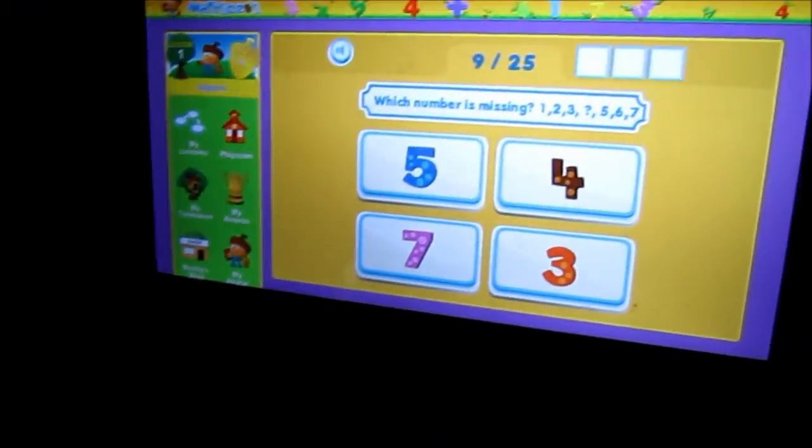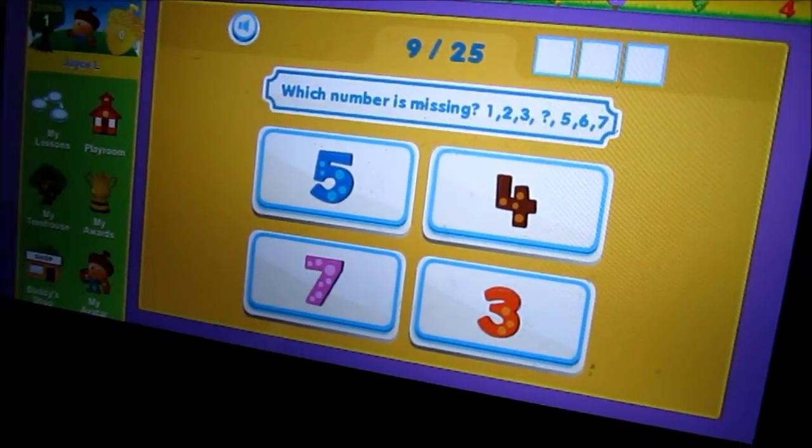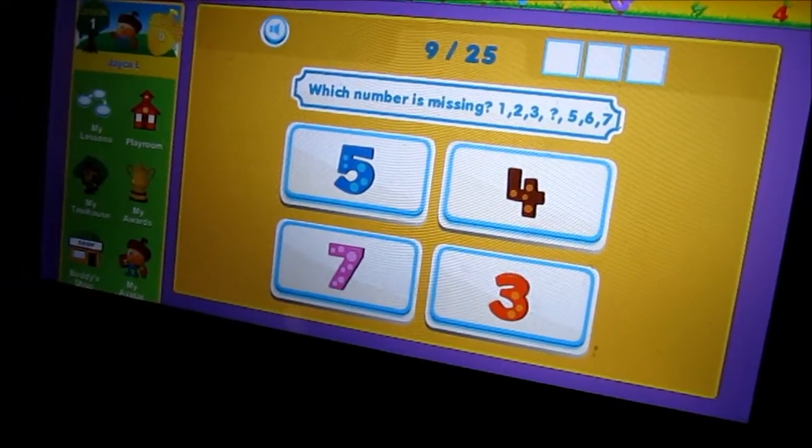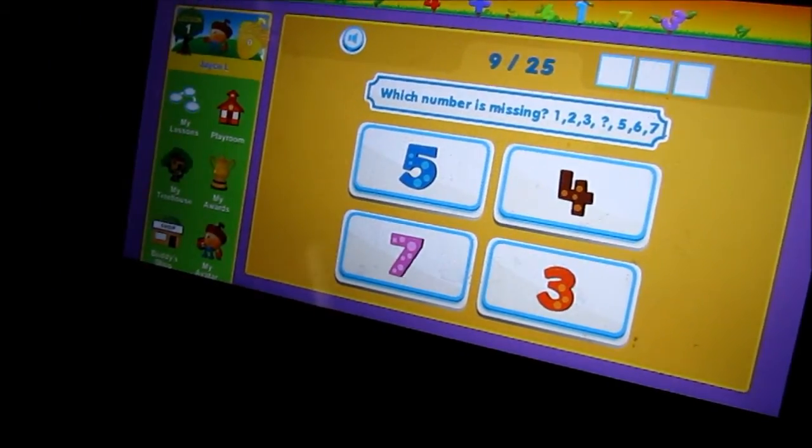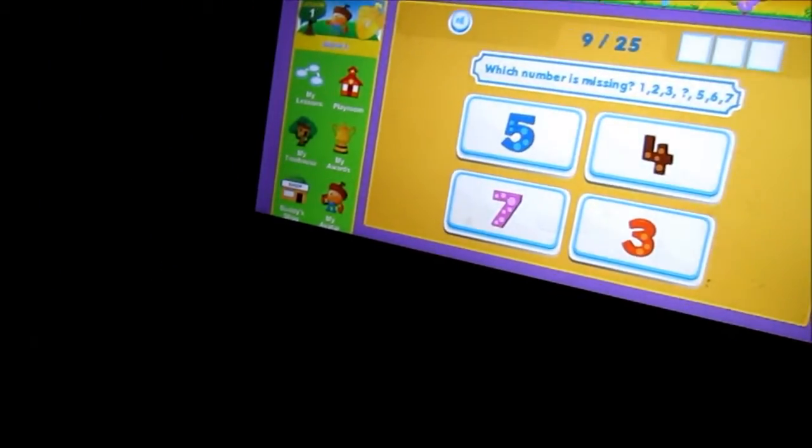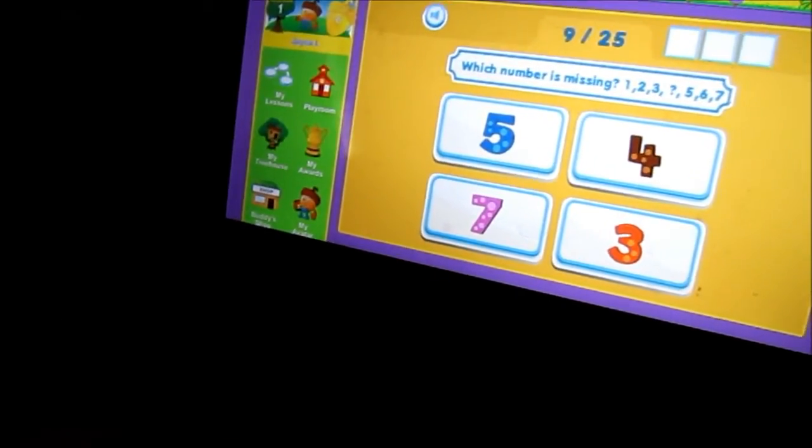Which number is missing? One, two, three, five, six, seven. So what's missing? One, two, three, four. Four, yes! Okay, four.